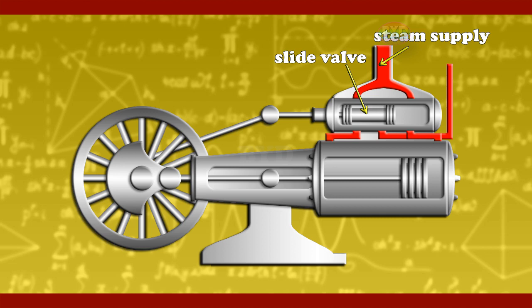The valve moves forward and backward from the eccentric mount on the crankshaft. The steam chest is the closed chamber integral to the cylinder. It supplies steam to the cylinder with the movement of the slide valve.